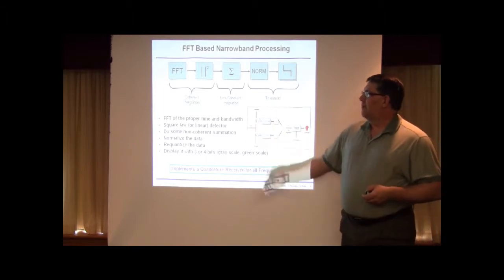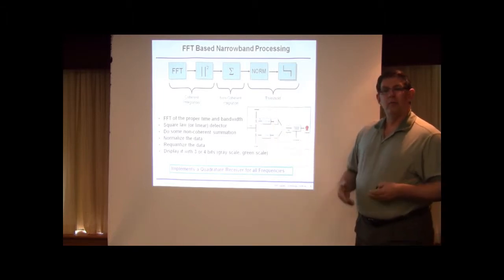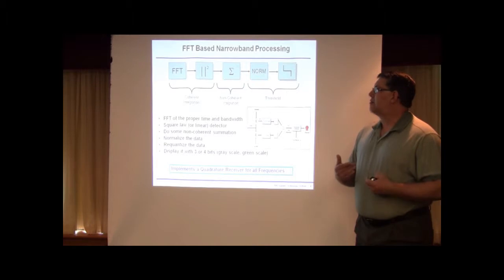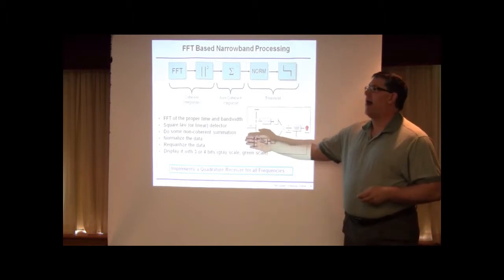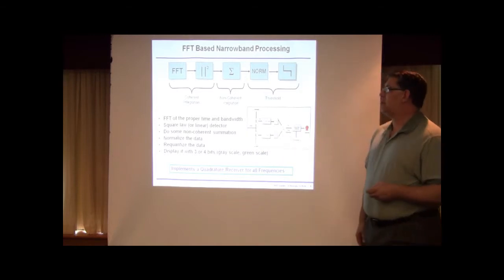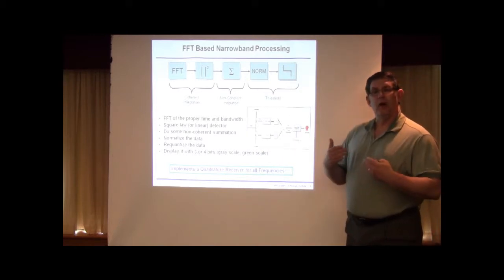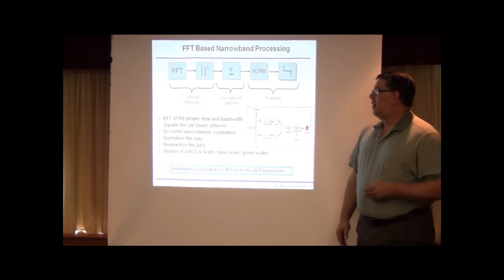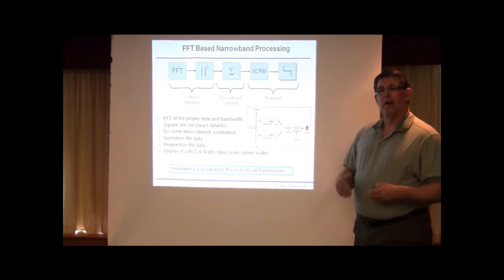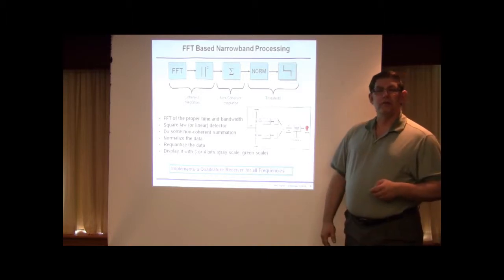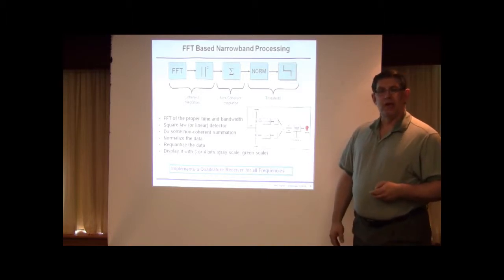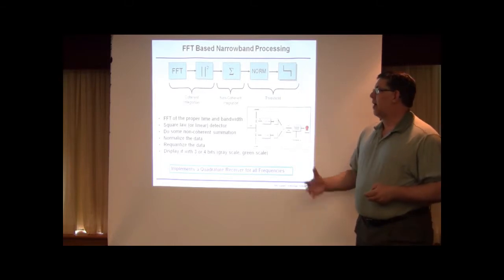So again, we want an FFT of the proper time and bandwidth, square law, and maybe we want to do a linear detector, do some non-coherent averaging to reduce the variance of the noise, normalize the data, which puts it on a set scale, re-quantize it for display, maybe squish the top end and enhance the bottom end a little bit so we can see very small SNR things, and then put it on a display usually with a 3- or 4-bit scale of either green or gray and sometimes colorized.